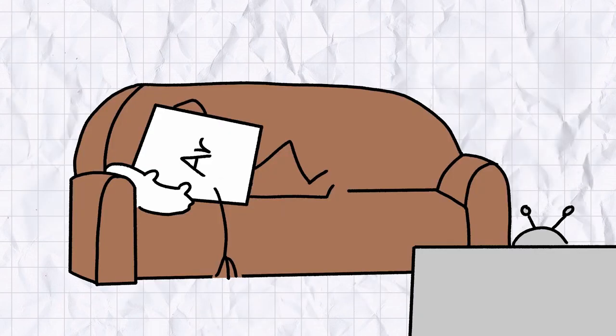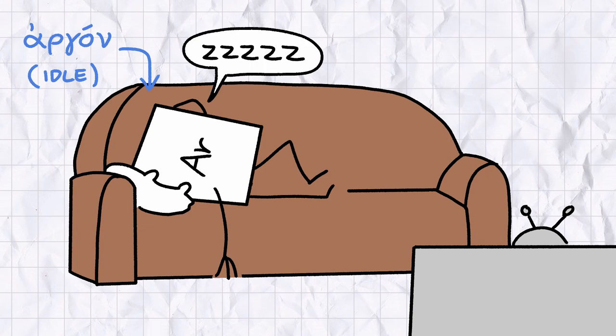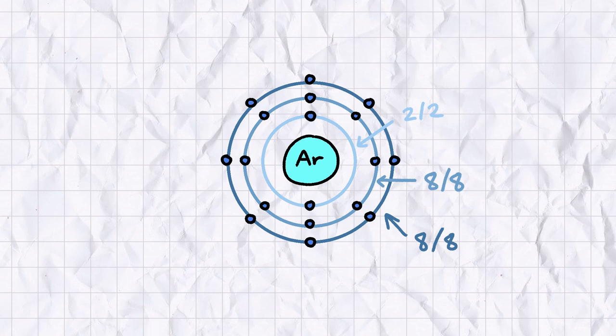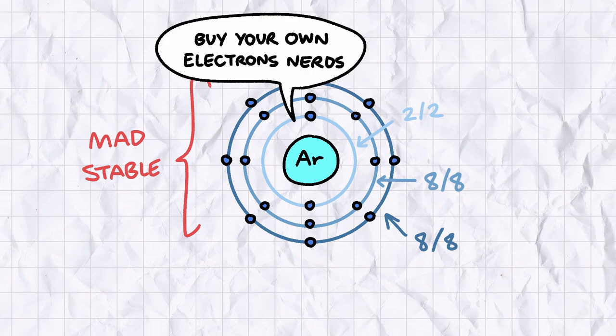Argon is so unreactive its name literally translates to idle in ancient Greek. Like all of the noble gases, argon atoms have full outer shells of electrons. This arrangement is extremely stable, and as argon atoms have no energetic incentives to share their electrons with others, they don't really go for the whole chemistry thing.